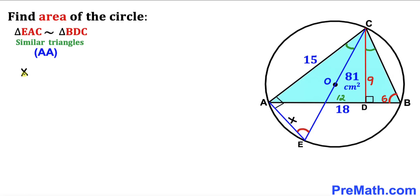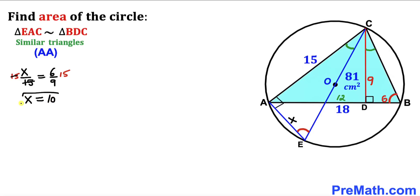Let me label side length AE as x. From the two similar triangles, we set up the proportion: x divided by 15 equals 6 divided by 9. Multiplying both sides by 15 to isolate x, we get x equals 10 centimeter. So length AE turns out to be 10 centimeter.